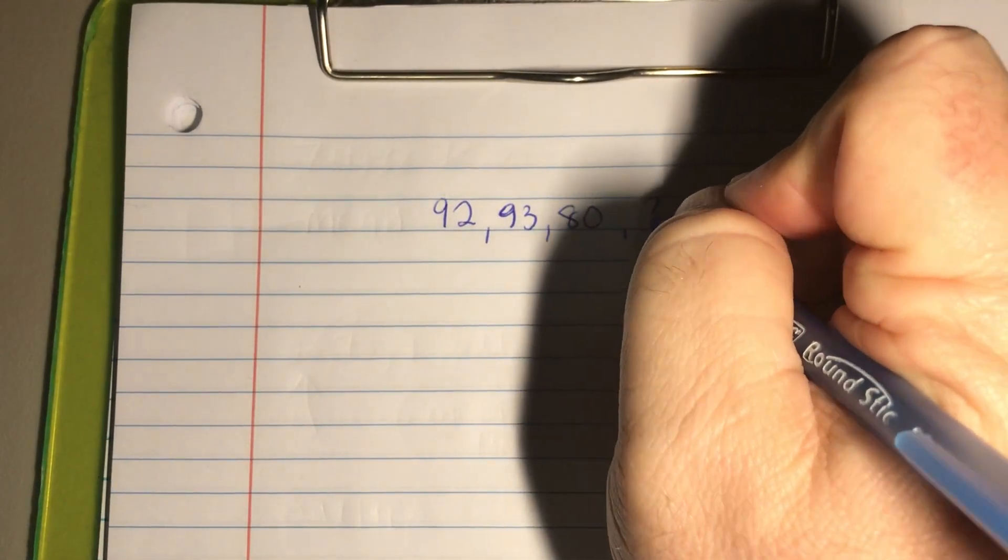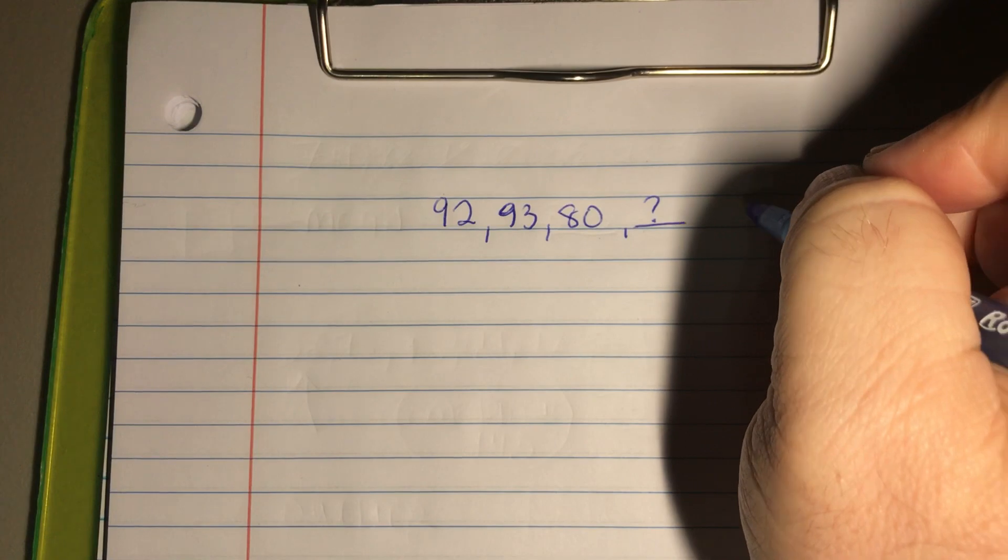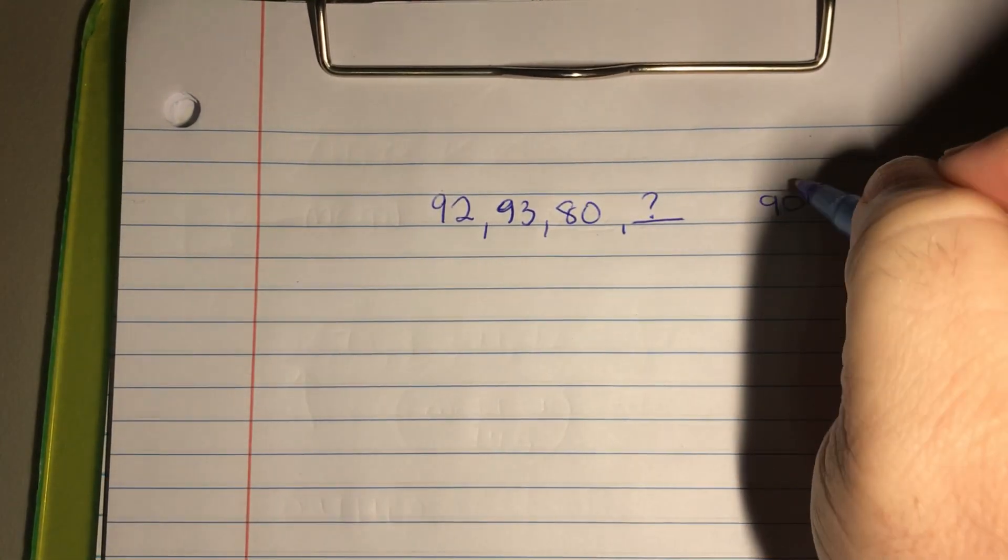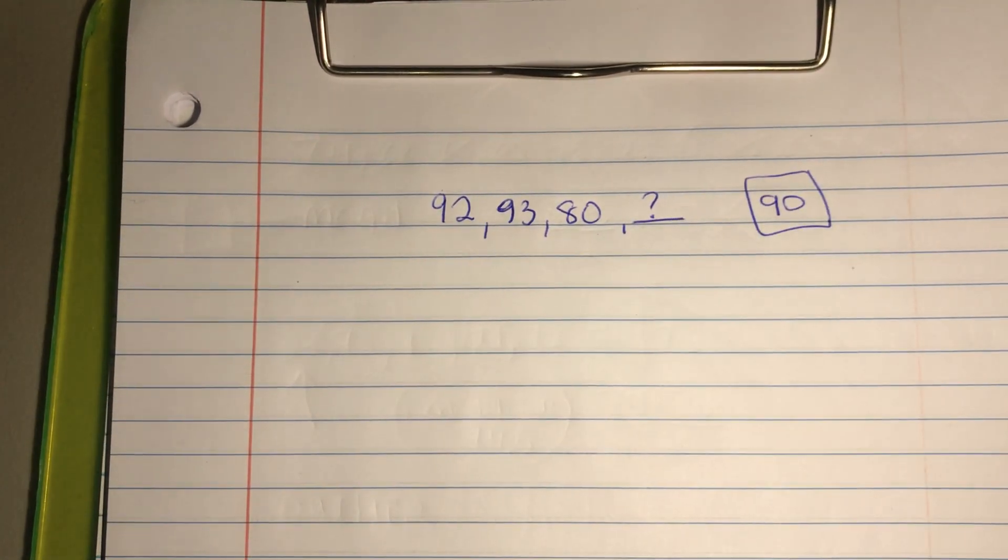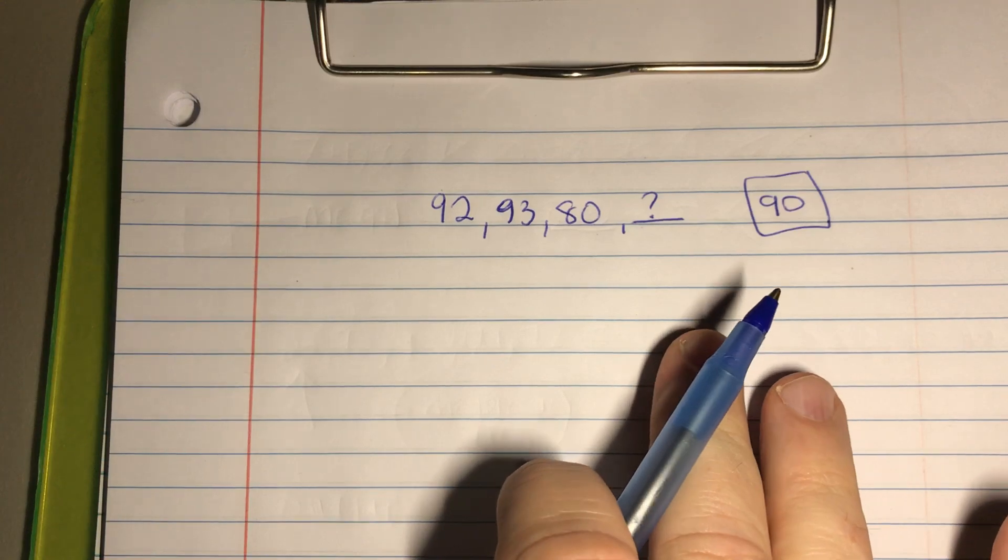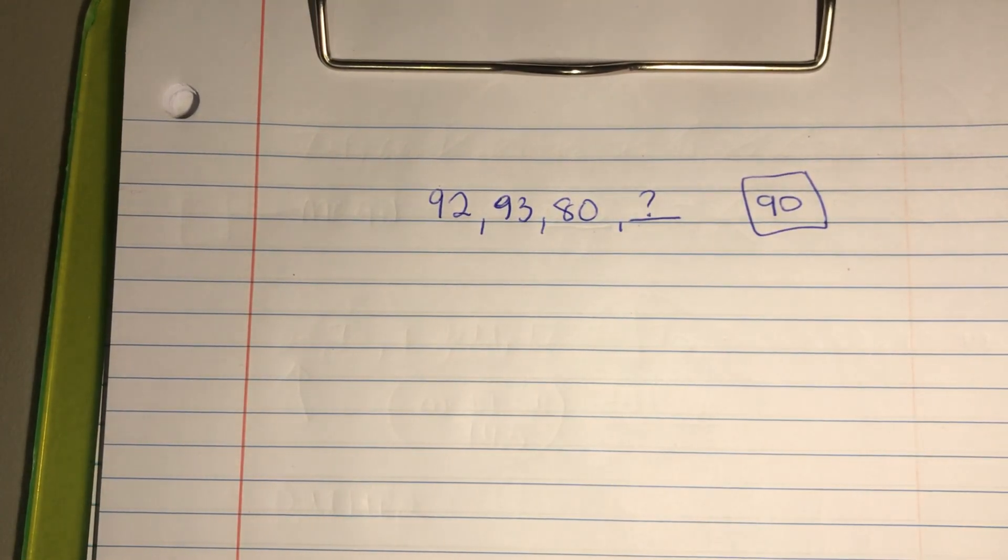What would they need to get on that fourth test if they're really aiming to get an A, which is of course a 90? So they want to get at least a 90 overall—that would be their average, their mean. We can try to figure it out by trial and error,